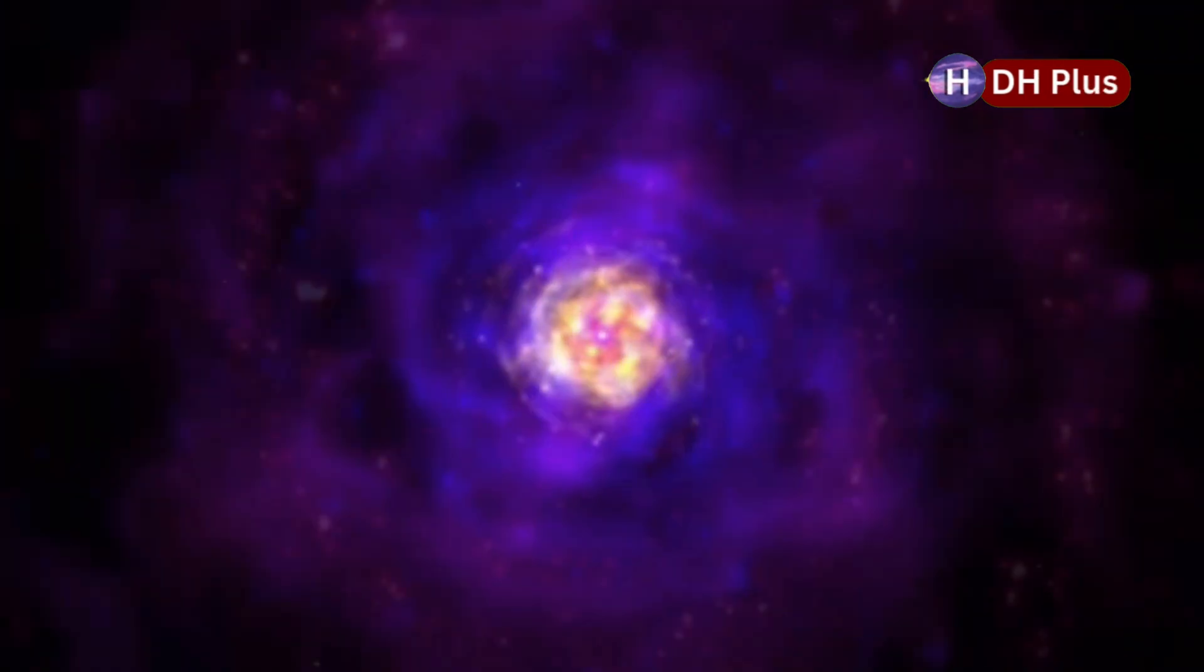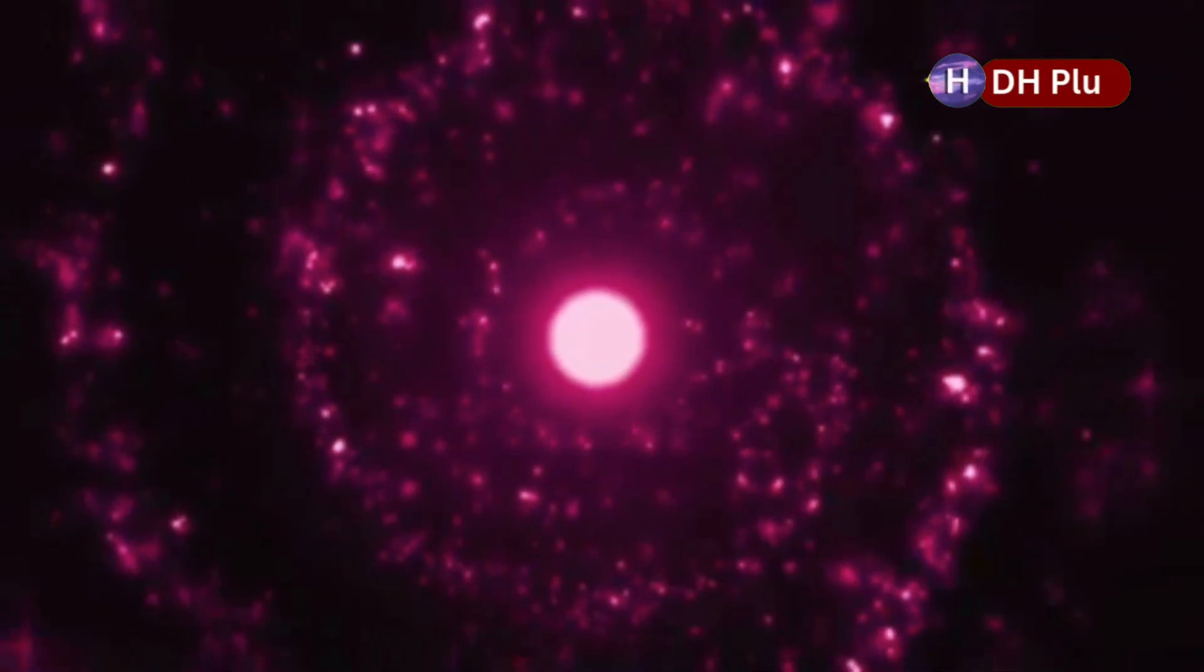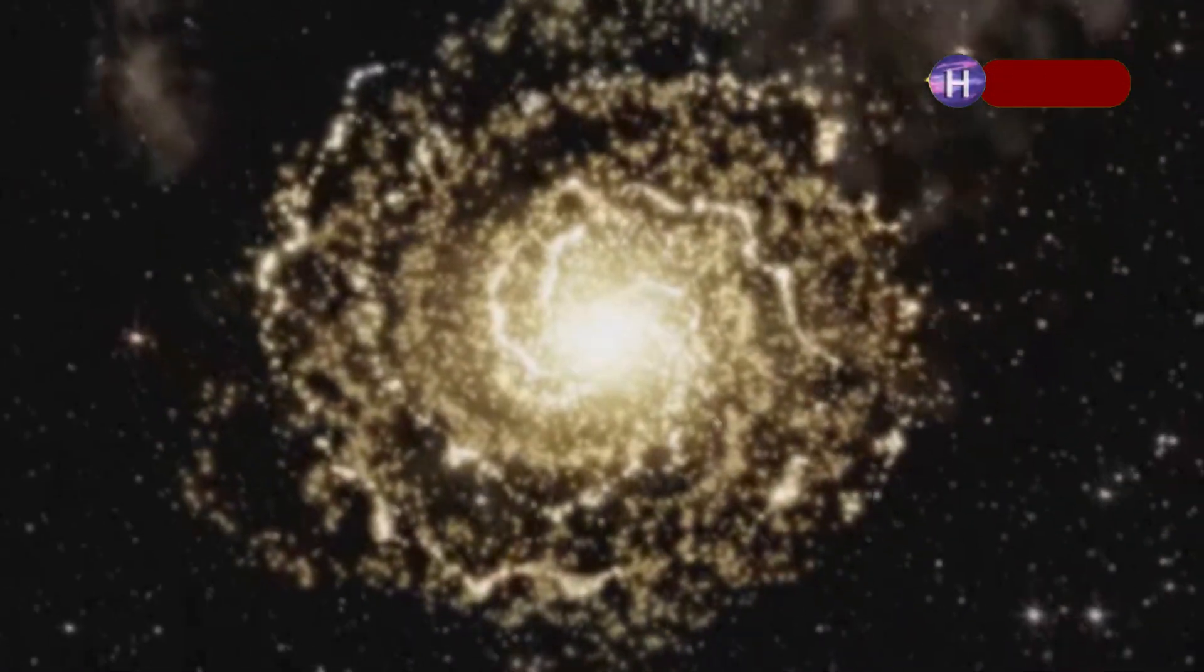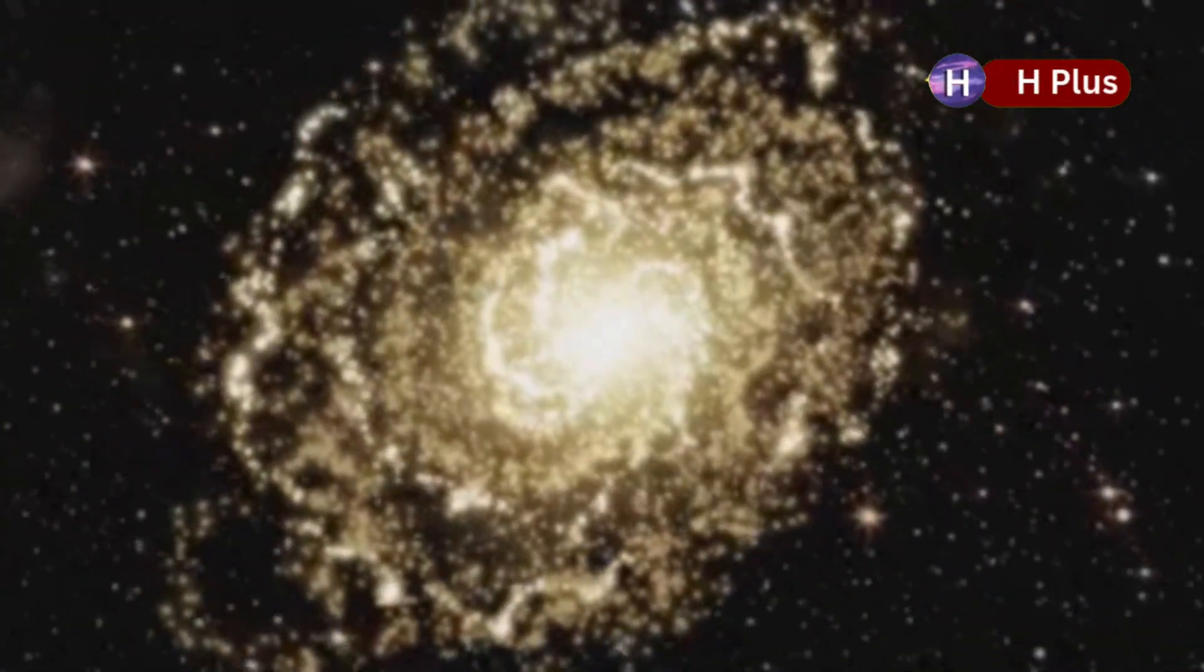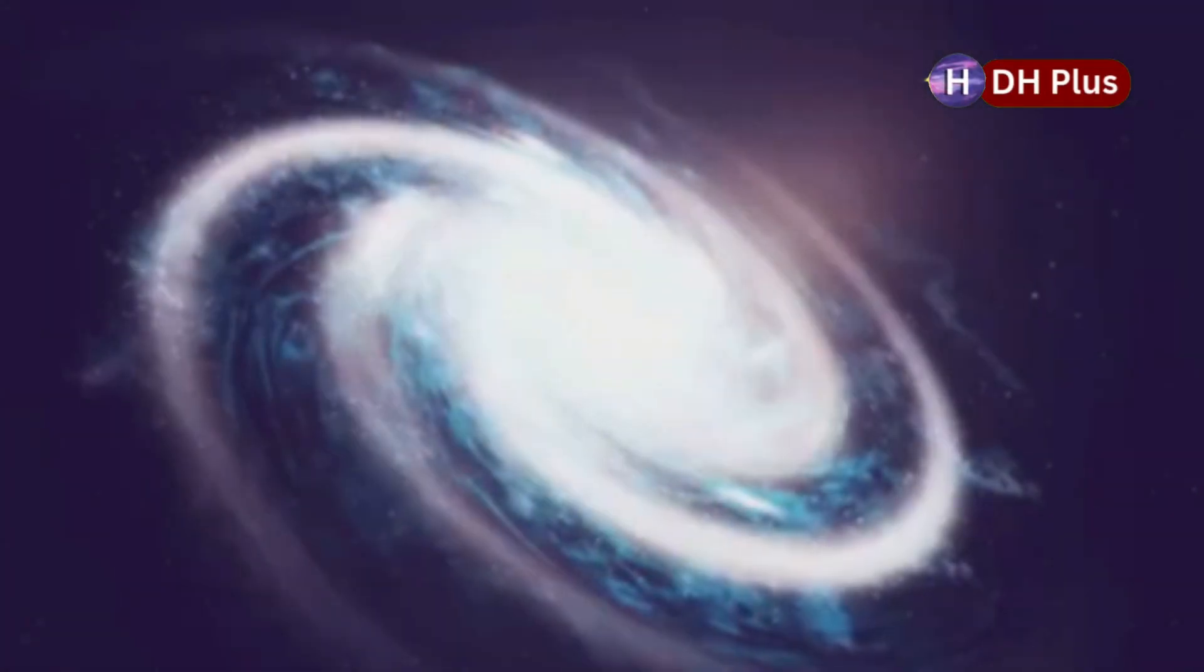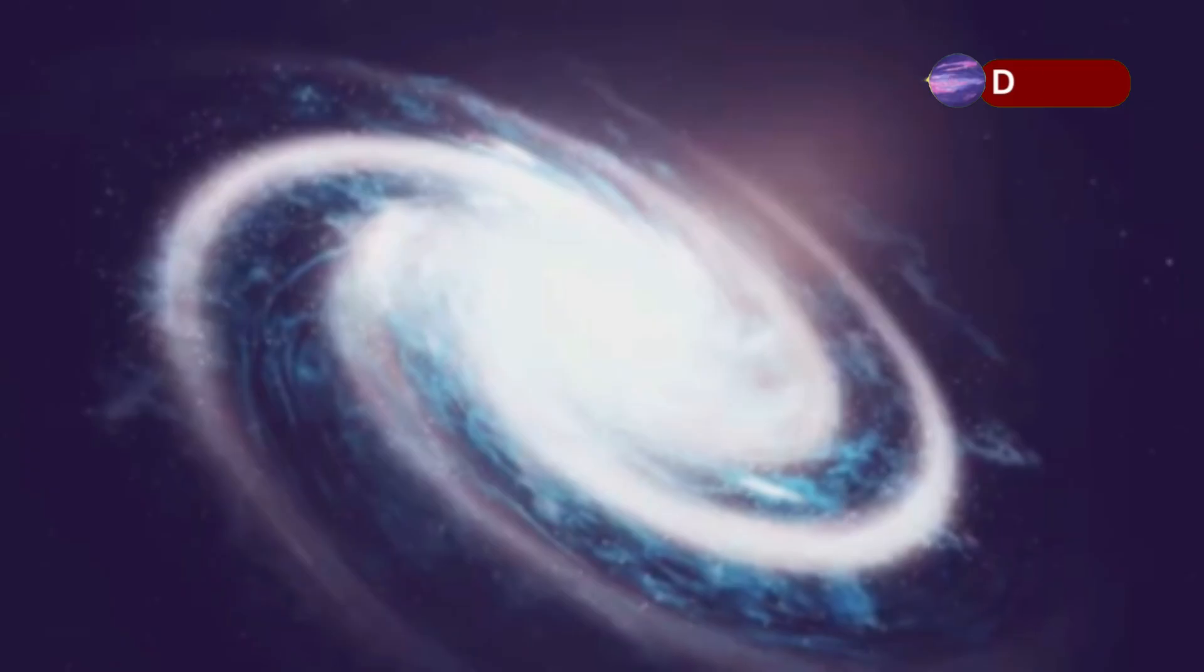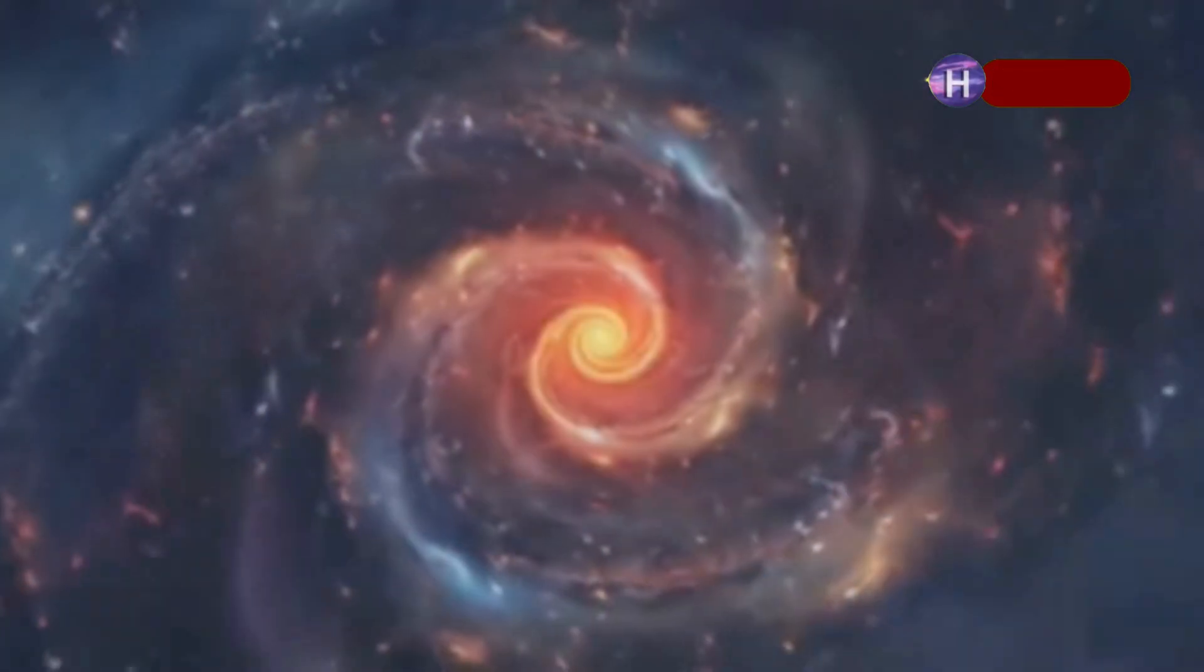Something strange is happening in our universe. Galaxies aren't spinning the way we expected them to. According to a new study, their rotation directions aren't randomly distributed as our current models predict. In a truly random universe, you'd expect an even split, about half spinning clockwise, half counterclockwise, but that's not what we're seeing.